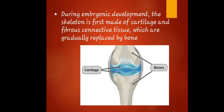During embryonic development, the skeleton is first made of cartilage and fibrous connective tissue, which are gradually replaced by bone. Meaning to say, the embryonic skeleton begins with cartilage and fibrous connective tissue, which serve as the basis for the gradual replacement of bone.